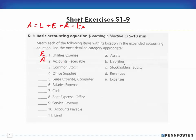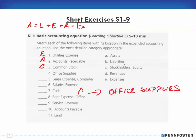Common stock is an investment in the business, so that would be stockholders' equity — category C. Office supplies: don't make a mistake here. If you buy office supplies and you own them — meaning you're inventorying them — that is an asset. However, if you buy office supplies and use them immediately in the operation of your business, then that would be an expense, and the account would be called 'office supplies expense.'